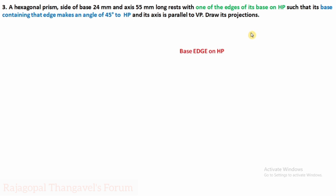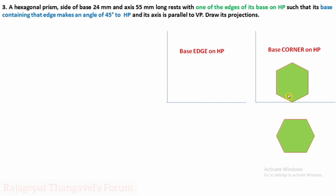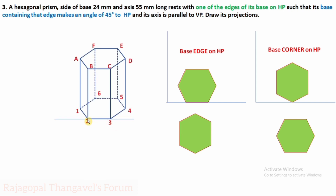First we will check the position of the hexagon with respect to XY. There are two options: base edge on HP or base corner on HP. When the corner is on HP, one corner of the hexagon is touching HP. After rotation of 90 degrees clockwise, that gives the top view position for corner on HP. As per our condition, it is base edge on HP — after rotation of 90 degrees, that edge becomes perpendicular to XY as per first angle projection. So one edge is on HP in the final top view hexagon position.